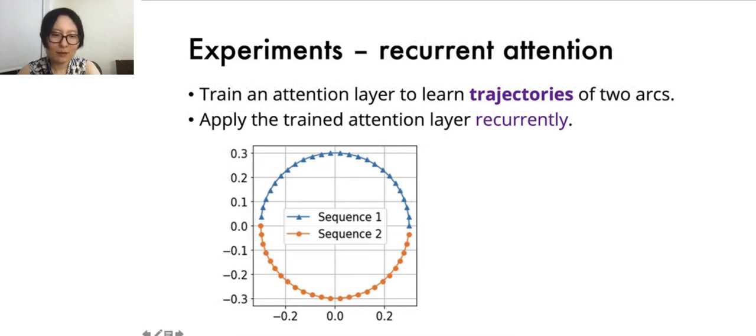In another experiment, we further test the inductive bias of different components of the transformer architecture. Specifically, we train a single-layer transformer to sequentially predict the trajectories of two circular arcs in R2, where the model is applied recurrently to predict successive points.